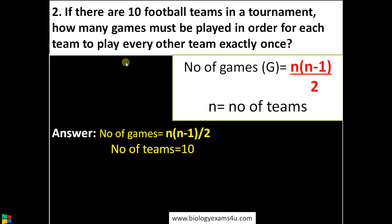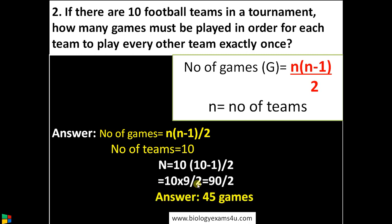Here the number of teams is 10, therefore 10 into 10 minus 1 by 2, that is 10 into 9 by 2, that is 90 by 2, which equals 45 games.